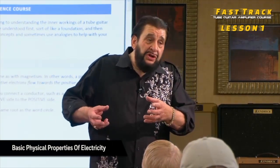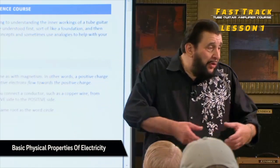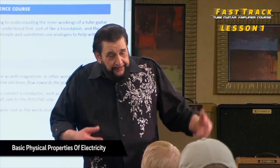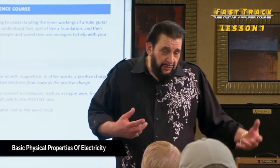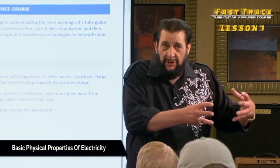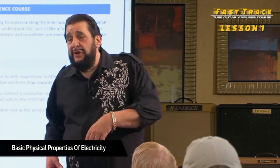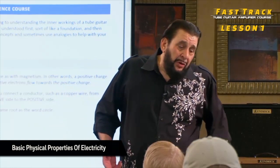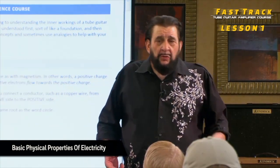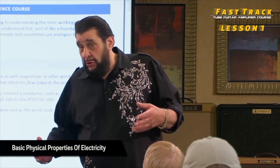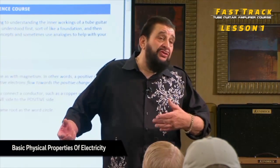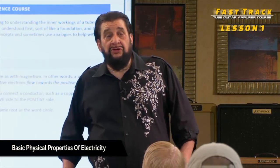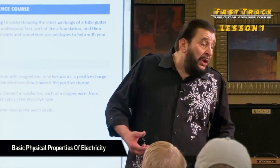The volume of electrons is called amperage. A volume of water is called gallons in the English system — there's a volume there. With electricity, the volume can be measured in amps or milliamps if it's a very small amount. Also, just like water has pressure, electricity has pressure too — it's called voltage.